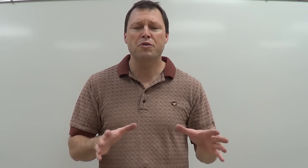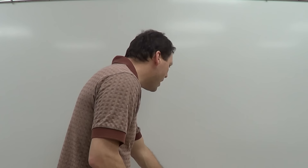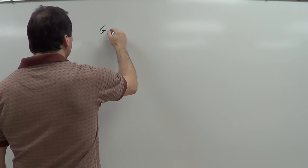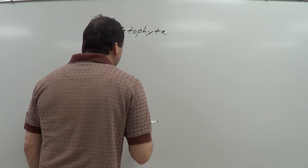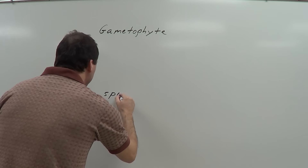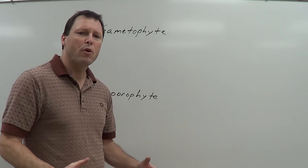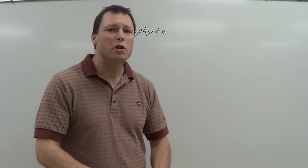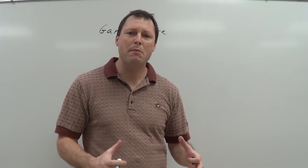Let's go ahead and draw the alternation of generations for green algae. I'm going to begin by drawing one generation called the gametophyte, and the other generation is going to be called the sporophyte. Now those you just have to memorize, but once you write down these two names, you should be able to build the rest of the life cycle without having to memorize anything else.